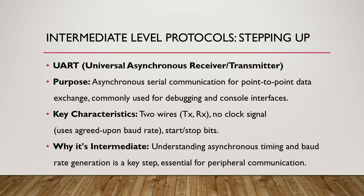Another intermediate-level protocol is UART — the Universal Asynchronous Receiver Transmitter. This is an asynchronous serial communication protocol primarily used for point-to-point data exchange. You will often find UART used for debugging, sending simple commands, or console interfaces. What makes it unique is that it only uses two wires: transmit and receive. Crucially, there is no shared clock signal between devices. Instead, both sides agree upon a baud rate — the speed of data transfer — and use start and stop bits to synchronize the data. Understanding asynchronous timing and generating the correct baud rate is essential for a wide range of peripheral communication.